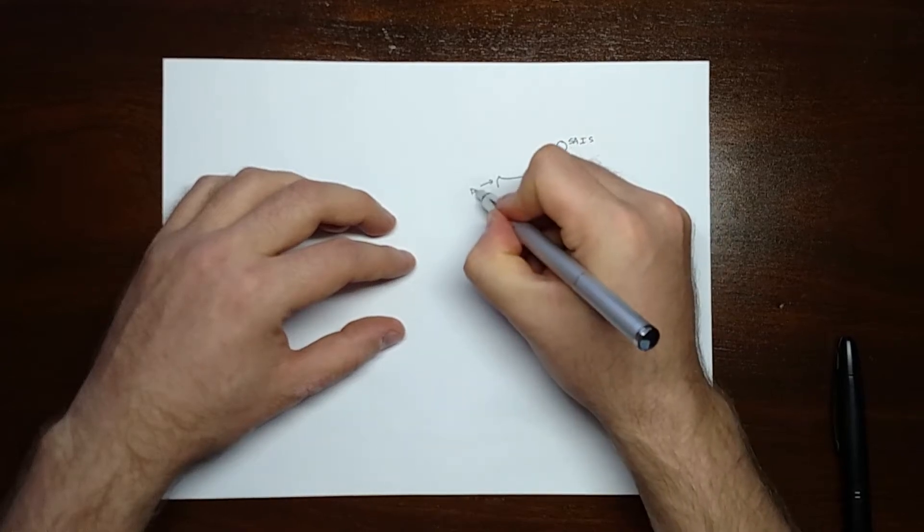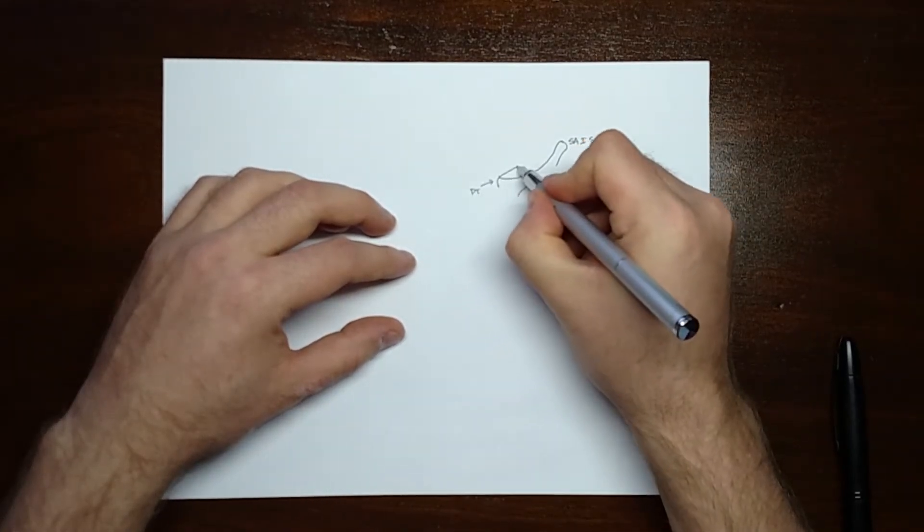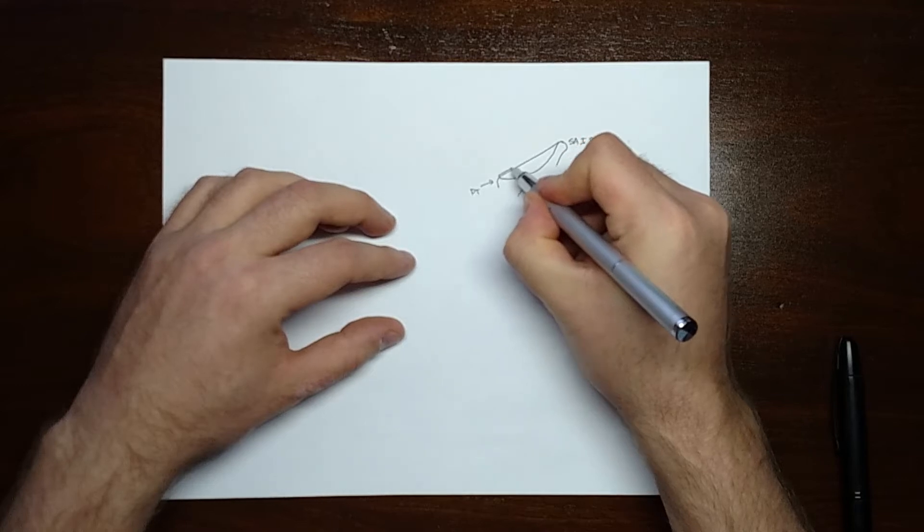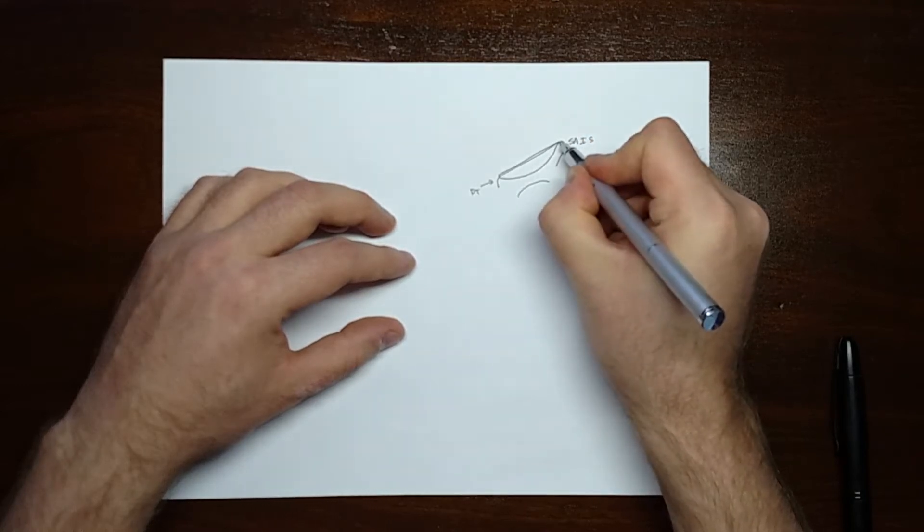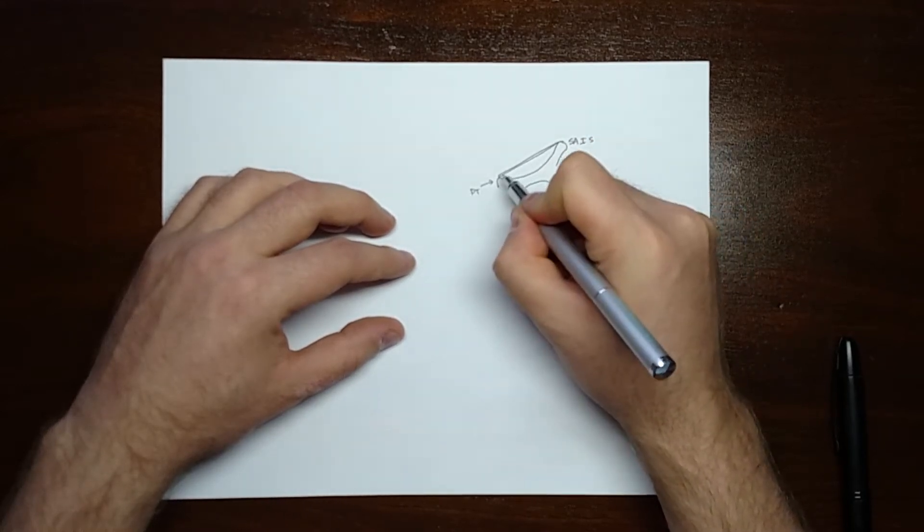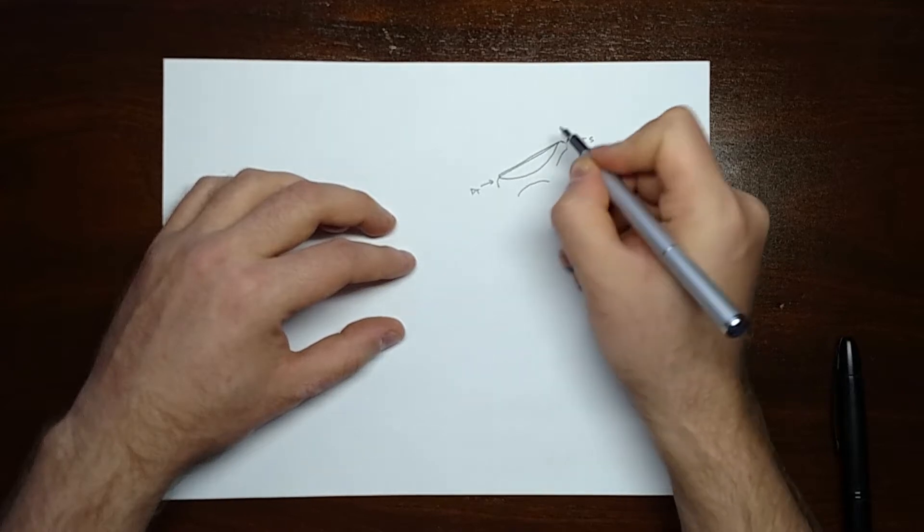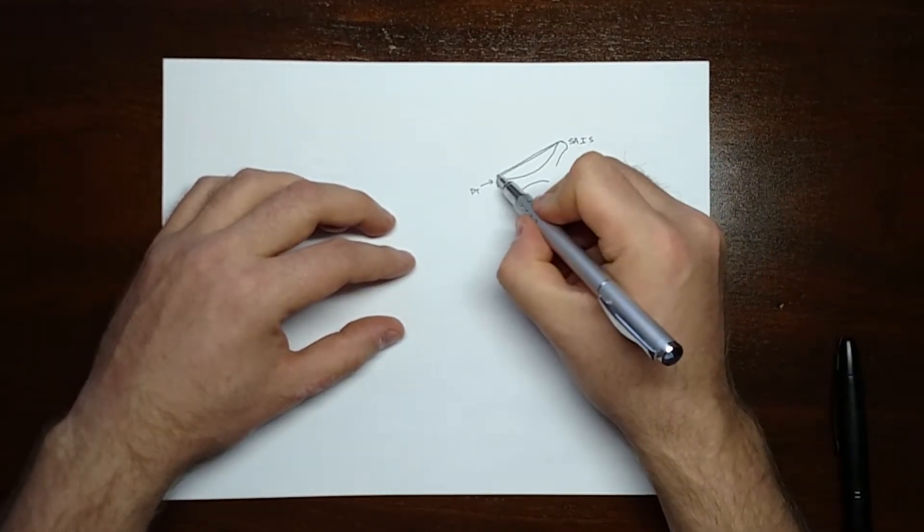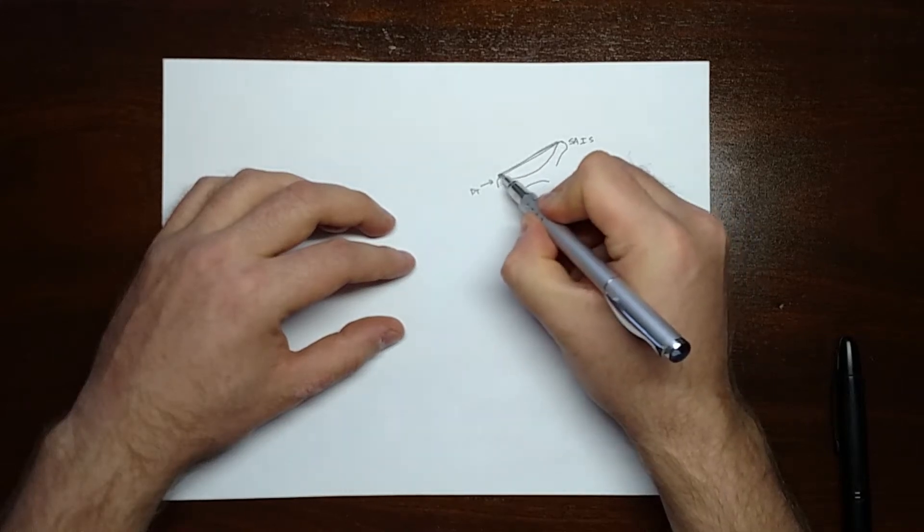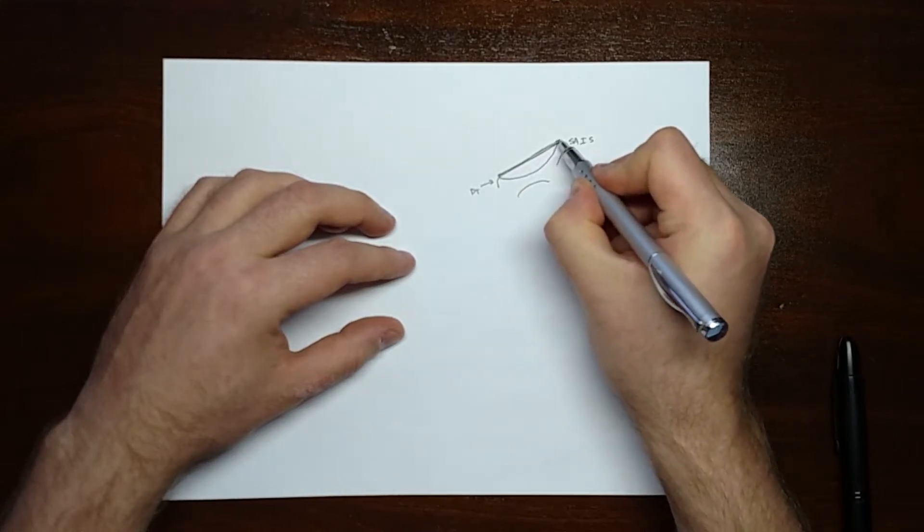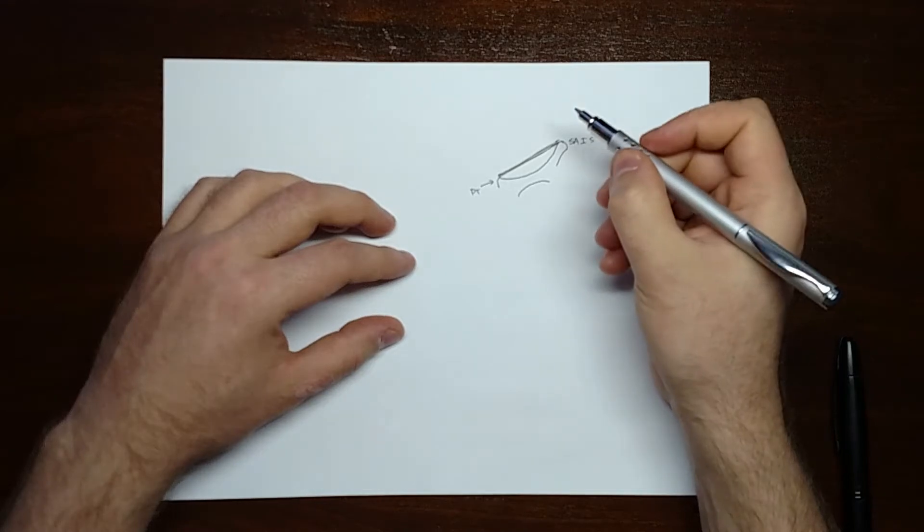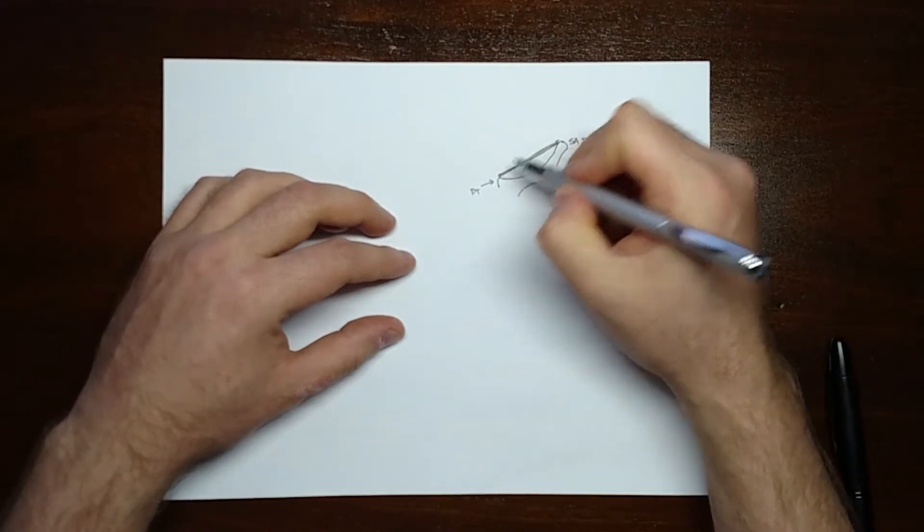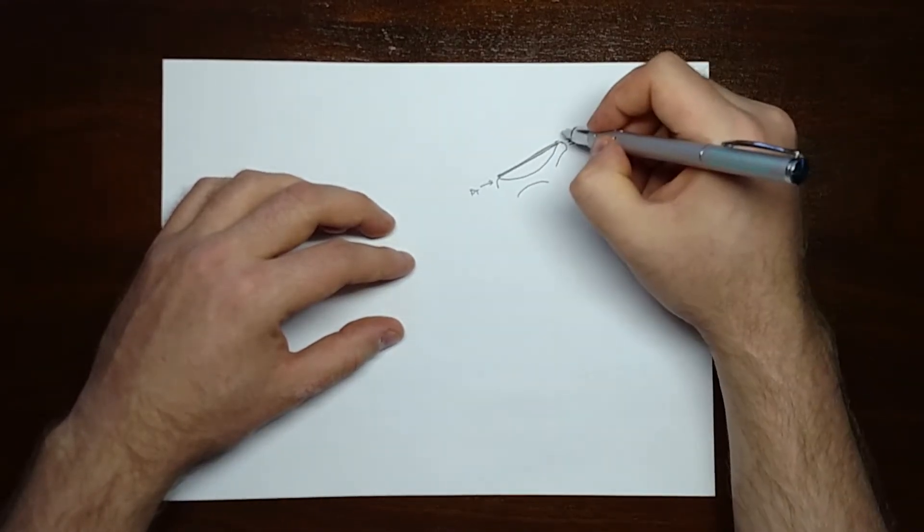Pubic tubercle. And then everyone knows the inguinal ligament kind of goes like this between the superior anterior iliac spine and the pubic tubercle. But really, this ligament isn't just a free-standing little piece of tendon.